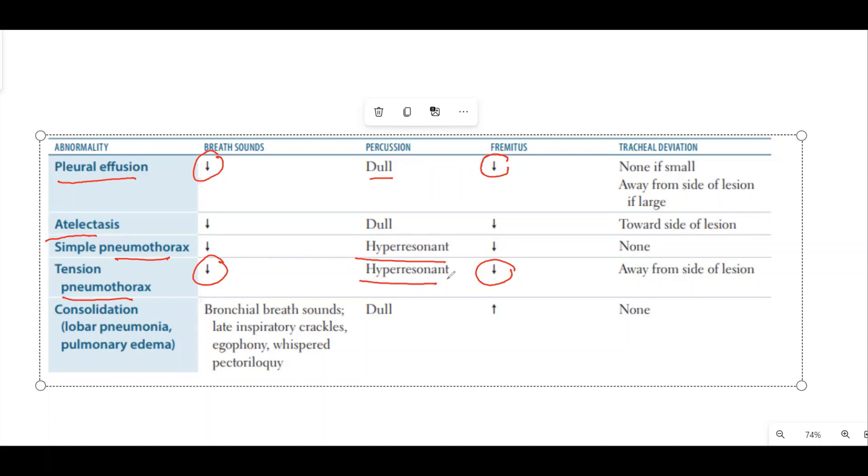The most important finding about tension pneumothorax is it moves away from the side of the lesion. It moves the mediastinum, trachea, and heart towards the opposite side. In case of consolidation, percussion is dull while vocal fremitus is increased, and breath sound is bronchial breath sound with late inspiratory crackles.